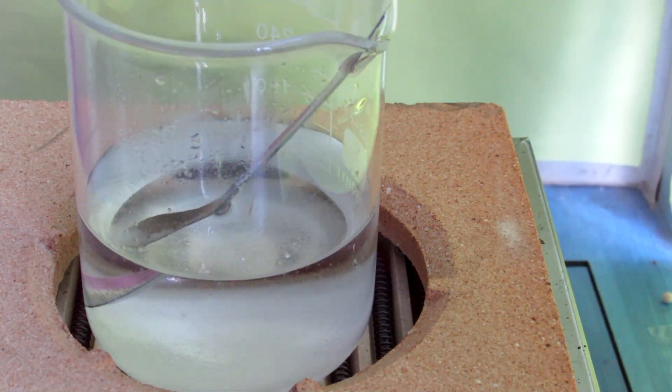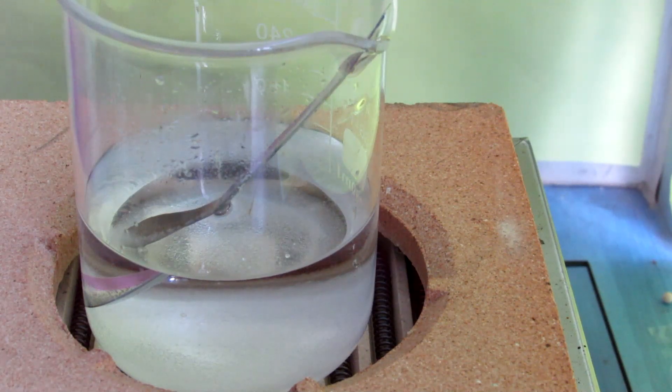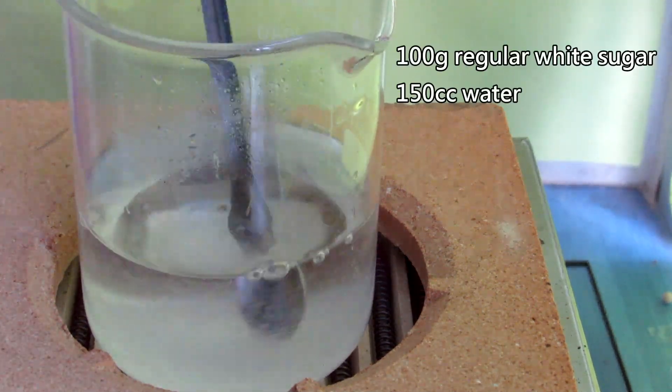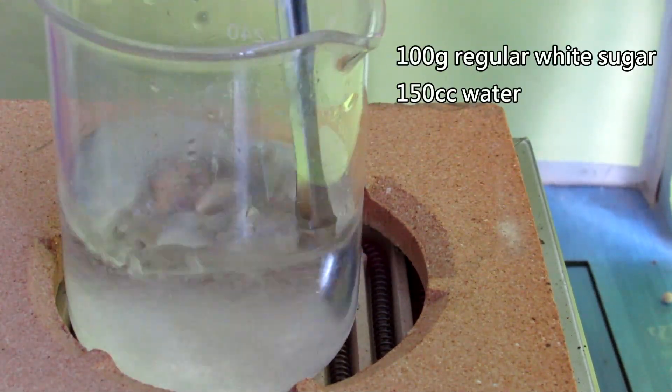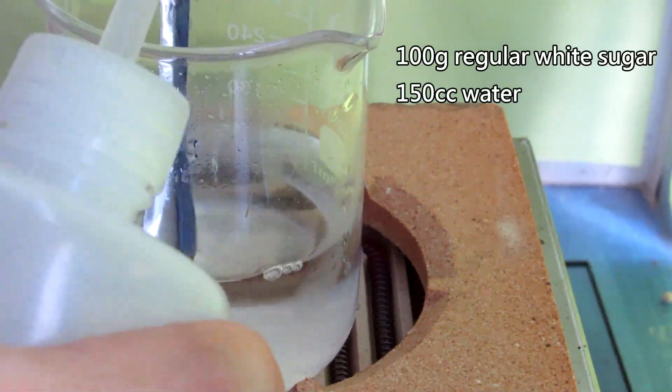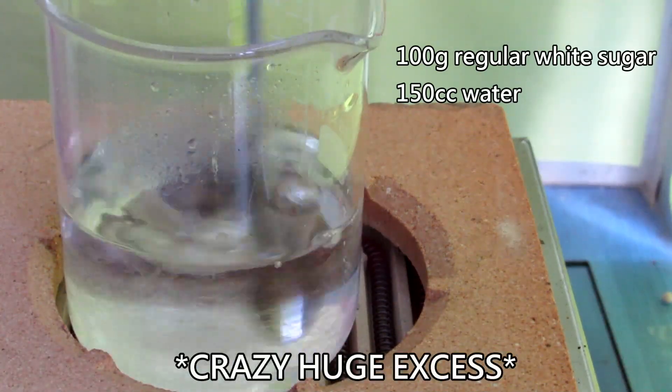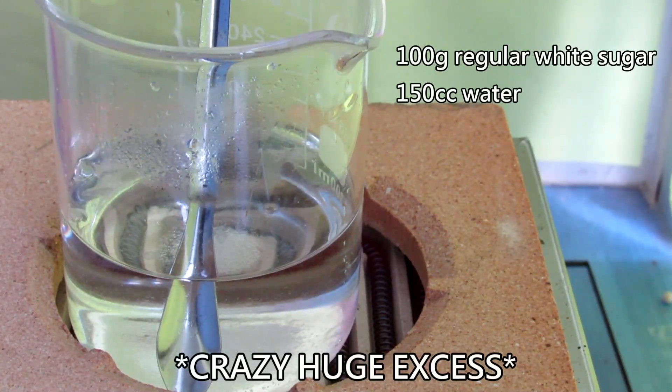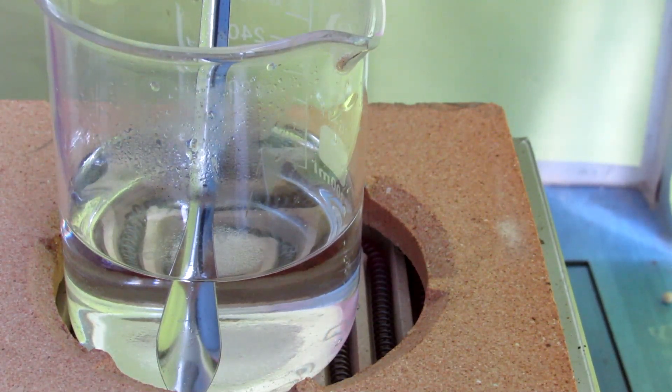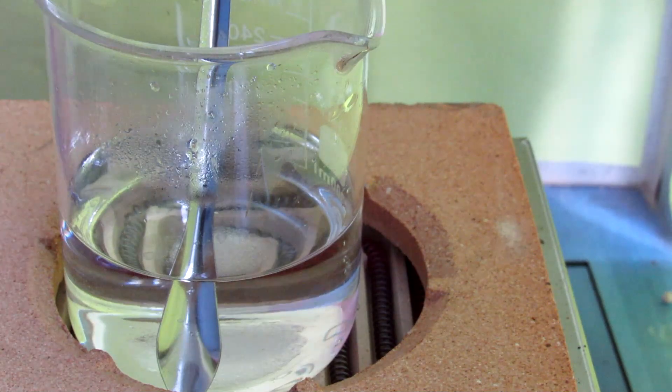Then, prepare some reducing sugar solution. In this case, I dissolved about 100 grams of sugar in 150 cc of water. This is actually a huge excess, but sugar is very cheap, and extra sugar won't hurt the reaction at all.